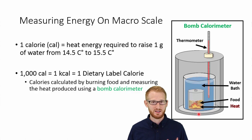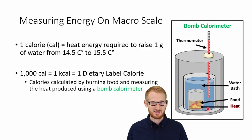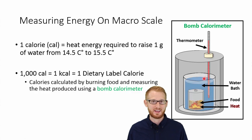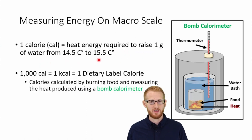We burn the food in this bomb calorimeter that's surrounded by a water bath, and that water bath is going to increase in temperature. That increase in temperature is measured with a thermometer, and that is how we calculate the calories of a certain food. One calorie is the amount of heat required to raise one gram of water from 14.5°C to 15.5°C.